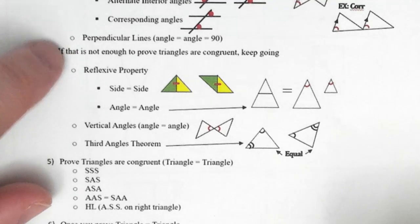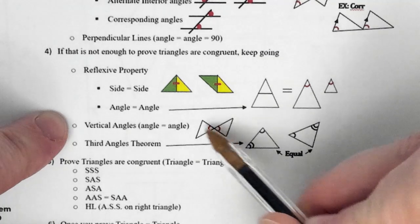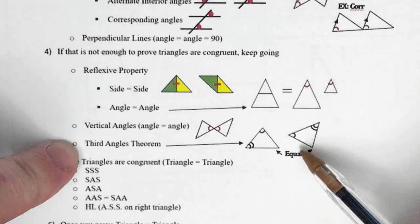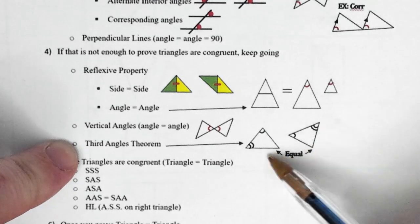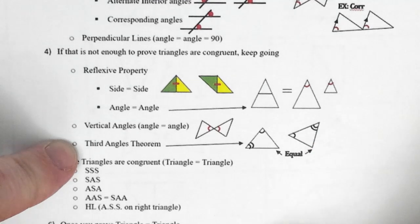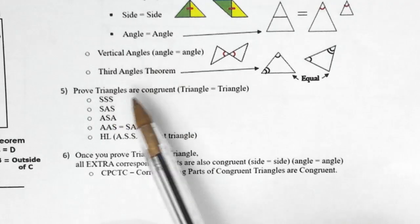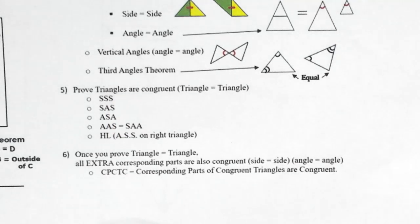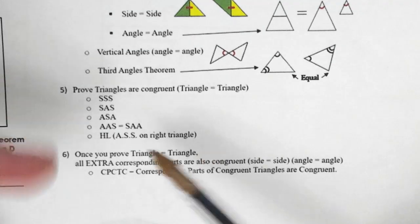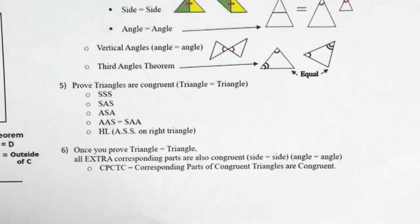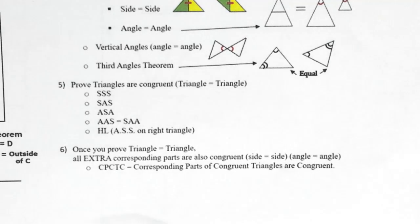Reflexive property is the most popular, but there's also vertical angles — those two angles are vertical so they'll be equal to each other. Finally, the third angles theorem: if these angles are equal and these second angles are equal, the leftover third angle in one triangle will be equal to the leftover third angle in the other. Then with all that information you should be able to do SSS, SAS, ASA, AAS, or hypotenuse-leg. After proving triangles congruent, any extra corresponding parts are also congruent — that's CPCTC: corresponding parts of congruent triangles are congruent.